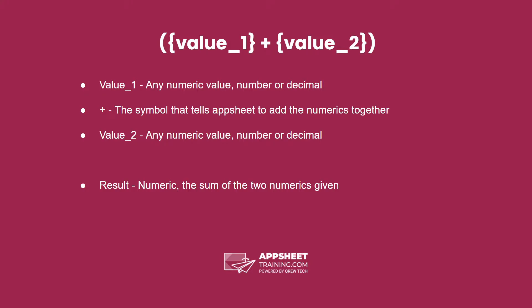The syntax is the first value, which can be any numeric value — a number or a decimal — the plus symbol, which tells AppSheet we want to add the two numerics together, and a second value, which is again any numeric value, a number or a decimal.